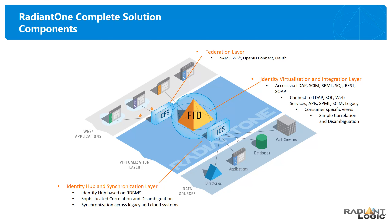Lastly, the Identity Correlation and Synchronization component — ICS — is for advanced identity correlation tasks where you might have multiple matching rules or cascading, more complex rules. ICS also includes bidirectional connectors that detect changes and synchronize those changes to many different targets, and it has a rule engine so you can define specific conditions and actions to synchronize information.